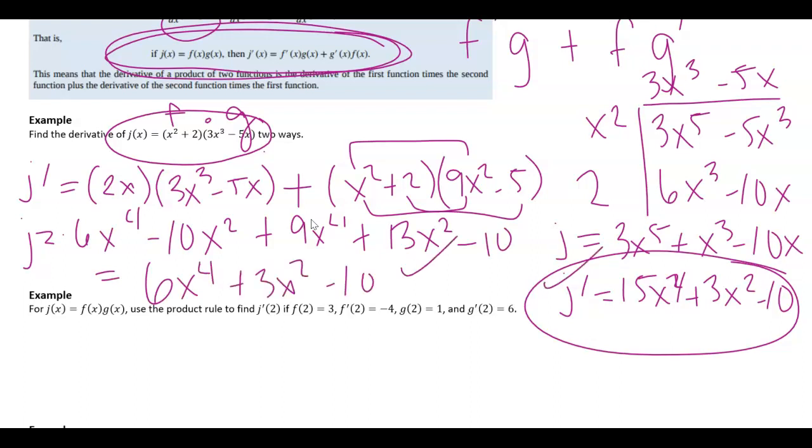So notice we get the same answer no matter which way we do it. It's just sometimes you have to use product rule because you can't just distribute out first and then use power rule. But I wanted to show you that it does work if you do have polynomials here to do either one.